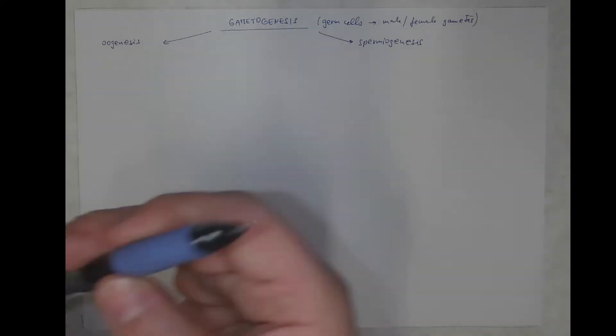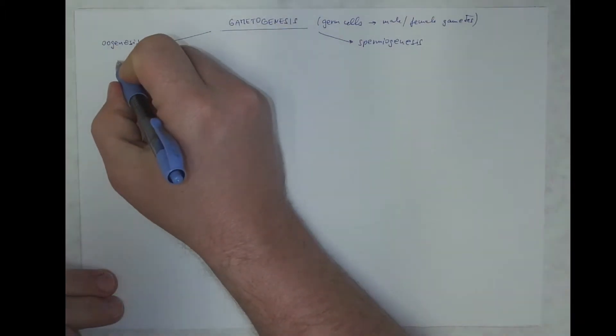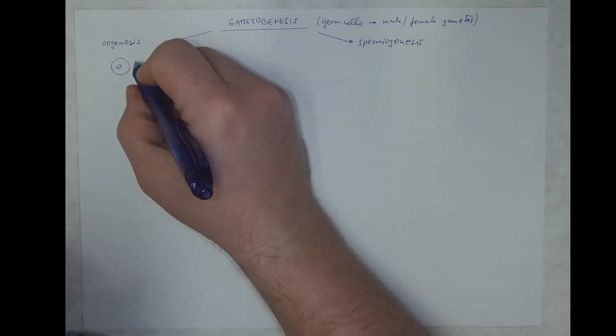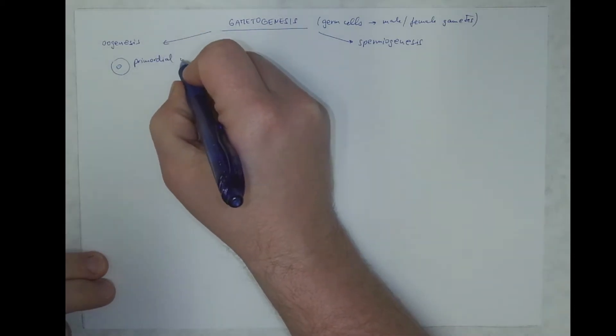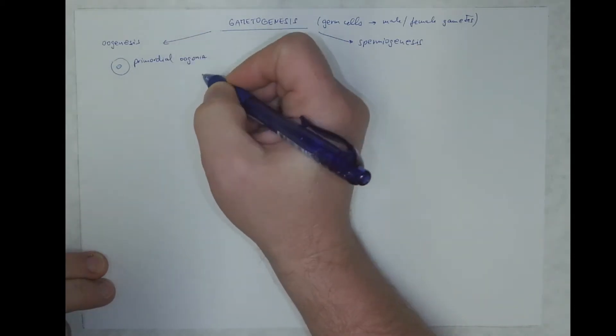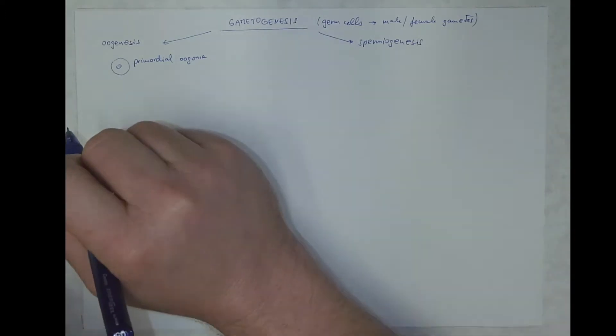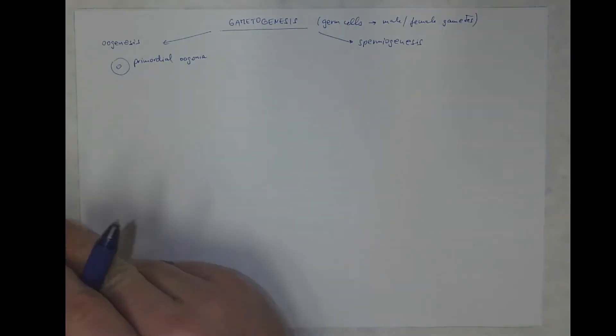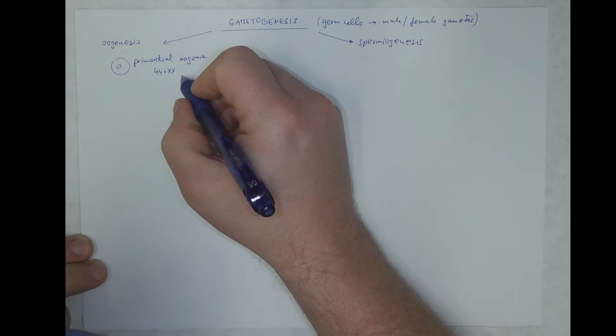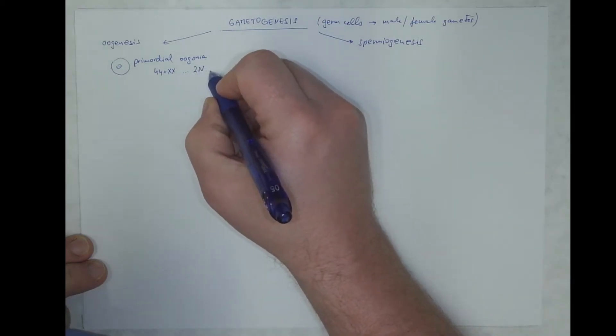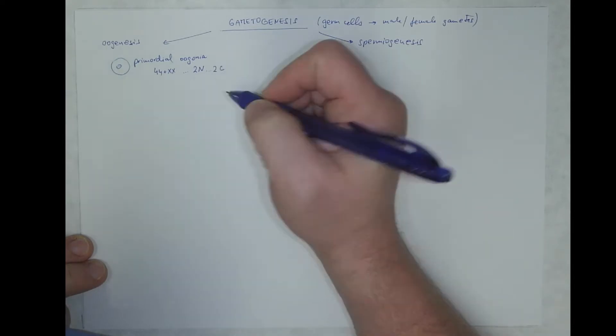It starts with the cells called primordial oogonia that are cells with 44 plus 2, so 46 altogether chromosomes, so diploid cells with this nuclear content.